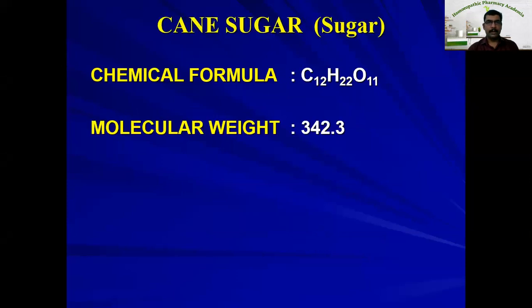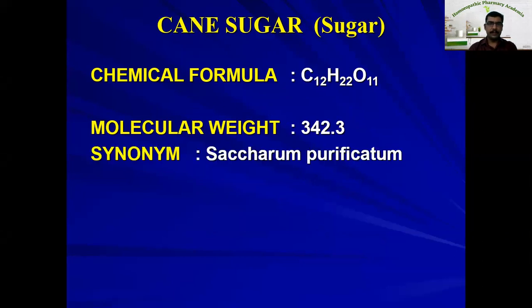Cane sugar is another solid particle used in homeopathic pharmacy. The chemical formula is C12H22O11 and the molecular weight is 342.3. The synonym of cane sugar is Saccharum purificatum — 'saccharum' means sugar and 'purificatum' means pure form. It is also known as refined sugar.